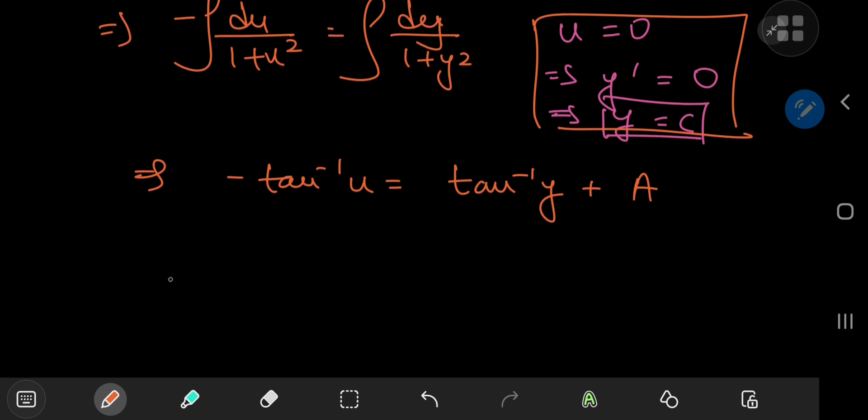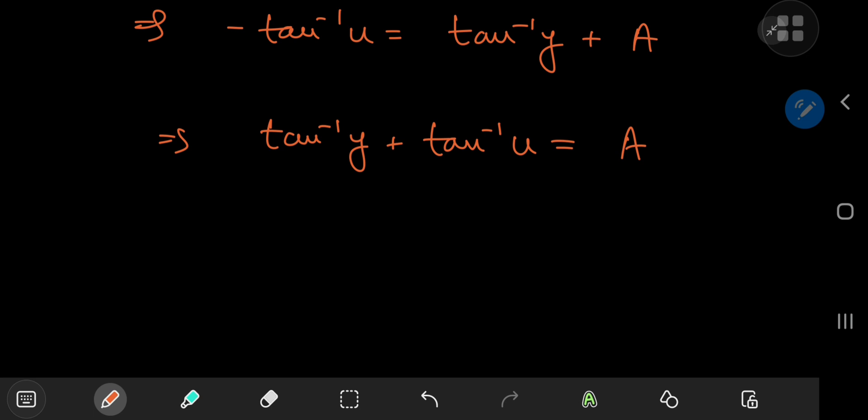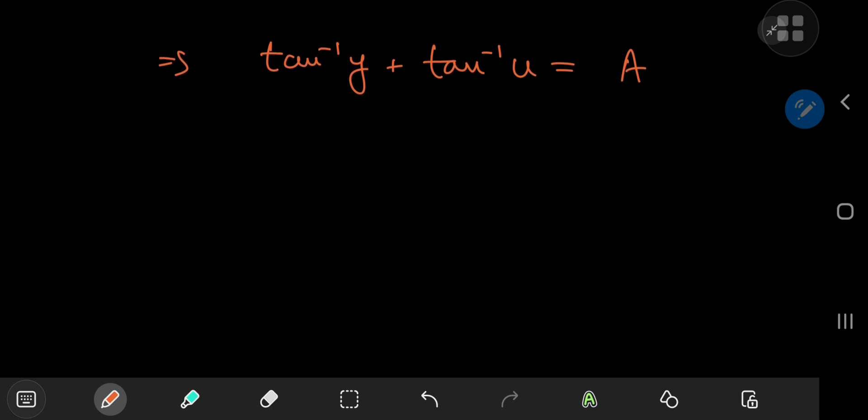Let's rearrange things some more. I can write this as the inverse tangent of y plus the inverse tangent of u being equal to a. I ditched a negative sign with the a term here, because a and negative a are both just constants. So either way, it's going to be a constant. I'm just writing this with a positive sign for aesthetic purposes anyway.